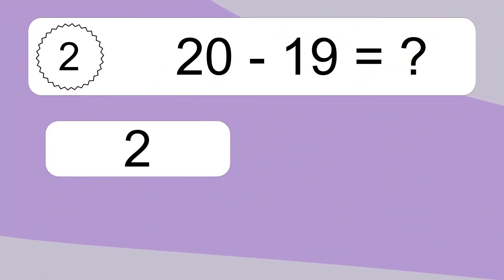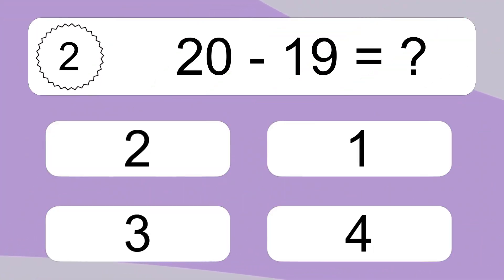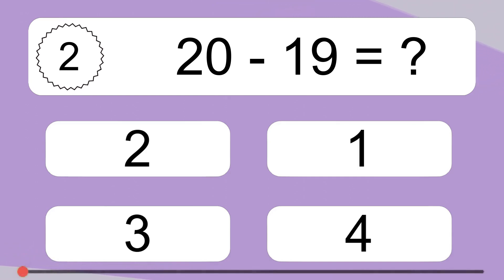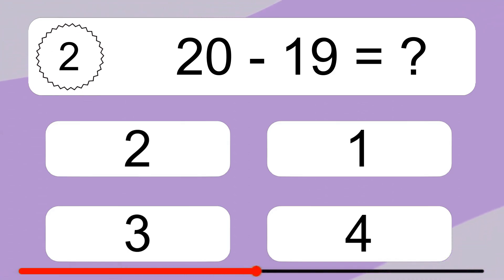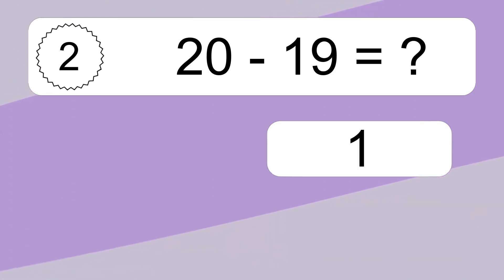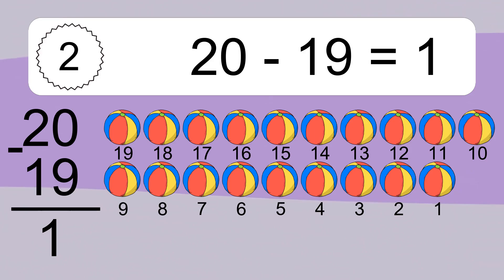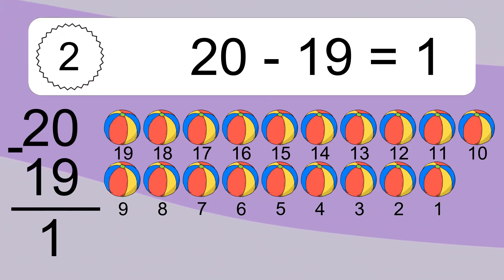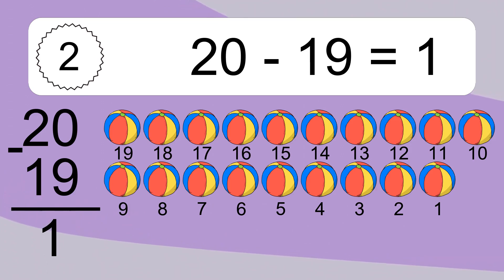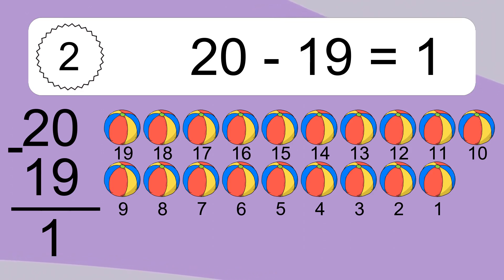20 minus 19 equals what? 20 minus 19 equals 1. Let's count it. 19, 18, 17, 16, 15, 14, 13, 12, 11, 10, 9, 8, 7, 6, 5, 4, 3, 2, 1.